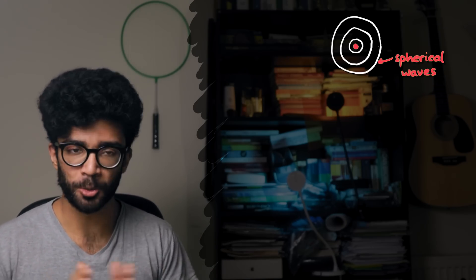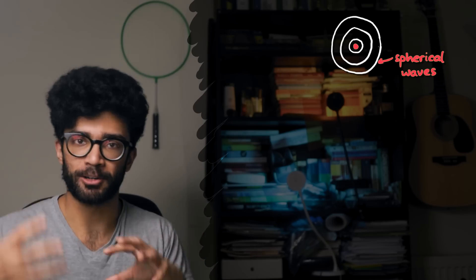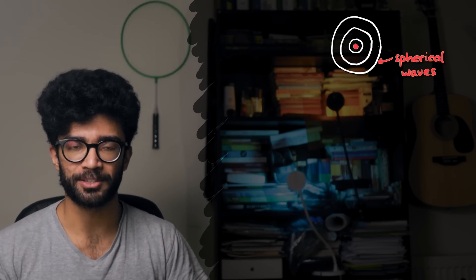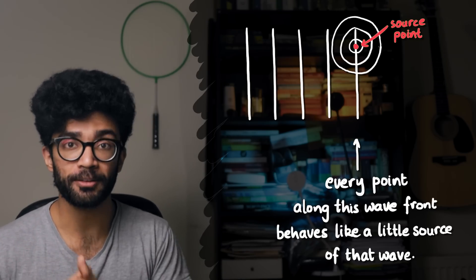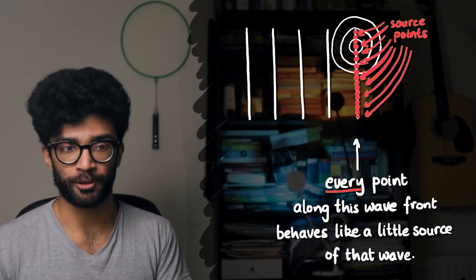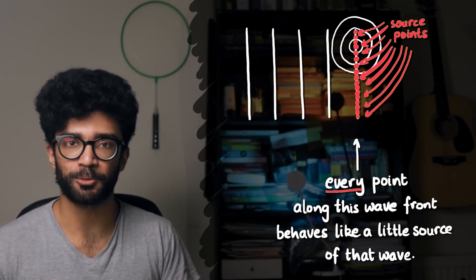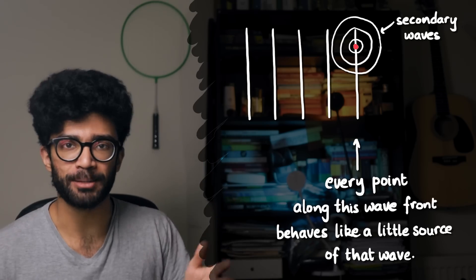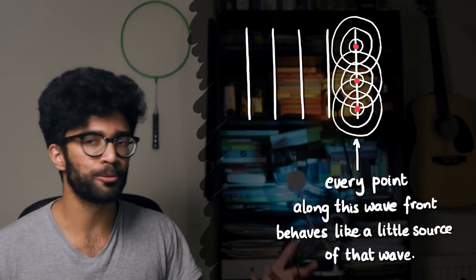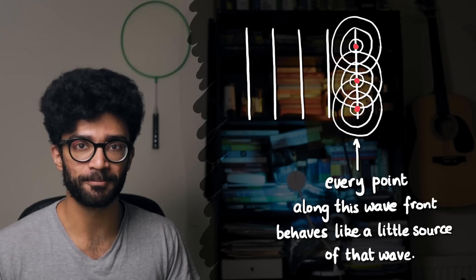Because waves are moving away from that point in all directions at the same speed, what you get is a spherical shape — I'm just drawing 2D here to keep things manageable. So we've drawn these waves propagating from a red point on our wavefront. Huygens said that every single point on the wavefront emits these kinds of waves, and these waves being emitted from these points are known as secondary waves. Let's draw in a couple more points — not every single one, since there are infinitely many, but enough to visualize what he was getting at.